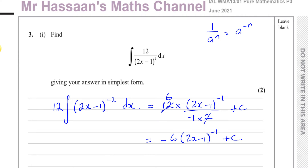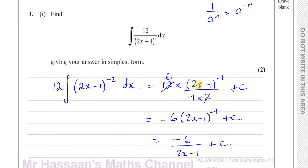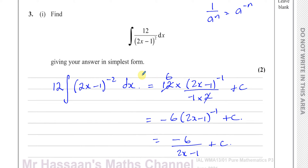If you want to go further you can write this as minus 6 over (2x minus 1) plus c. That's also fine, and there we have the answer to question 3 part 1 — a straightforward reverse of the chain rule integration.